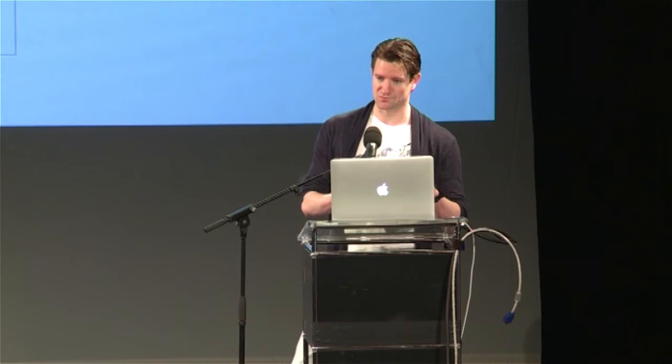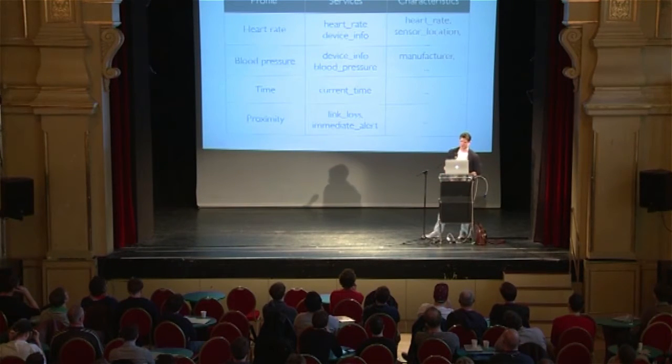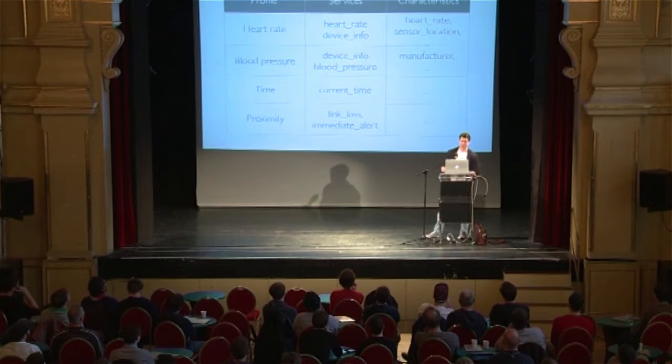One of those profiles is heart rate. Another includes support sensors like blood pressure, time, and proximity. Each profile basically defines which services should be implemented should you want to conform to the profile. In the case of the heart rate monitor, it defines two services: a heart rate service and a device info service. The device info is just the name of the device. The heart rate service specifies a few characteristics to be implemented — one of which is the heart rate itself, and another is the sensor location. This sensor is around my chest, but I've also seen sensors around the wrist.